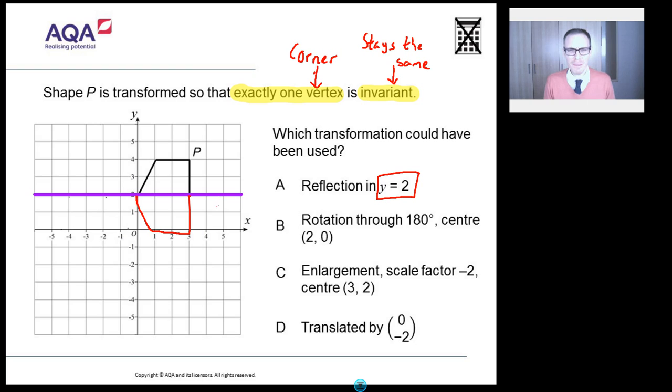So how many points are invariant? How many points have stayed in the same place? Well, that top point here, he hasn't, right? So he was there and now he's down here. So forget him. But look at this point here. That stayed in the exact same place. So those two points have remained invariant. But I want exactly one vertex. So that can't be the answer. But hopefully now you're starting to see what invariance is all about. It's nothing too hard, right?